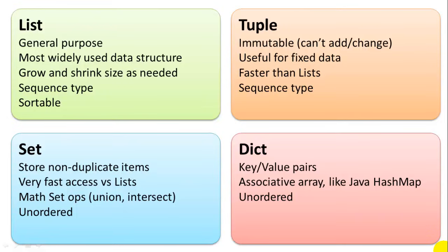So the list is a sequence type. It's sortable. The tuple is immutable, which means it can't change, add, or remove items in a tuple once it's been created. So it's useful for fixed data. And tuple is also a sequence type, which we'll explain in a second.